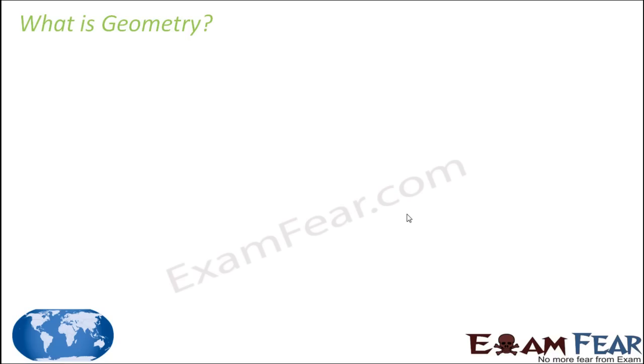Let's start the chapter with geometry. What is geometry? Geometry is a word derived from two words: 'geo' that means earth, and 'metry' that means measuring. So geometry was nothing but measuring the earth.